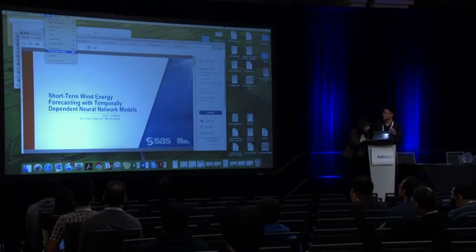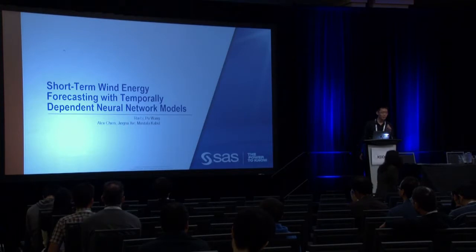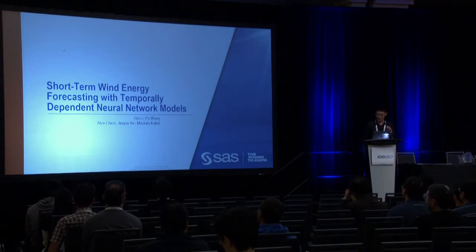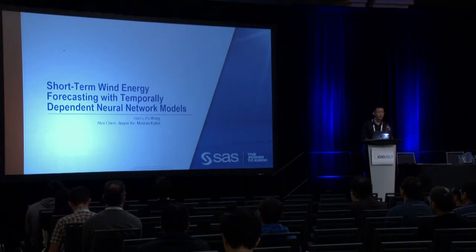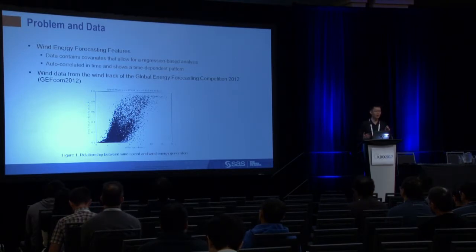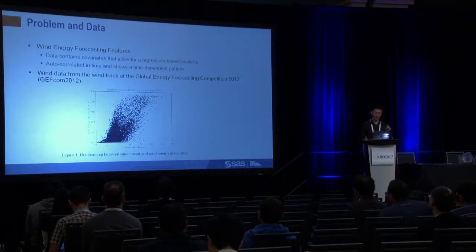This presentation is about short-term wind energy forecasting using deep neural network methods, work done during an internship at SAS. In wind energy forecasting, people generally fall into two groups: either using time series methods like ARIMA, or using regression-based methods like neural networks or other machine learning methods.